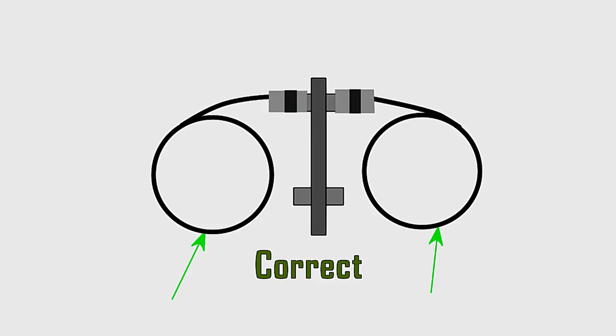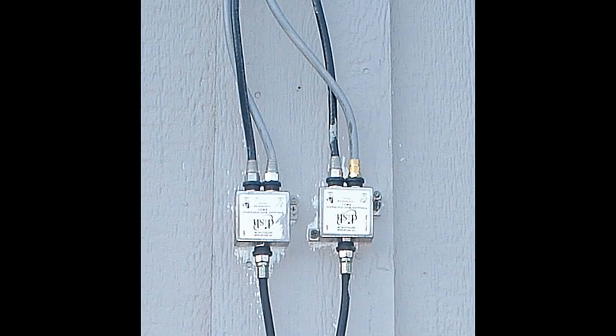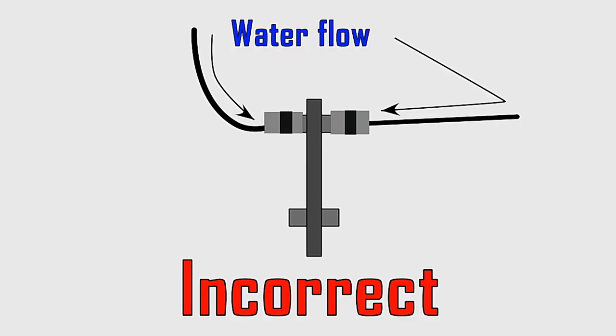Also don't forget to do what we call a drip loop. It's pretty much where you give yourself a little bit of excess wire before you go into the ground block. It's just you looping the wire around before you go into the ground block or splitter. And also don't go straight into the splitter. You want to come from the bottom up into the splitter. That way if it was to ever rain, the rain doesn't flow into your splitter or your ground block. It flows down with the wiring.